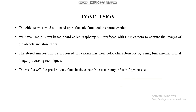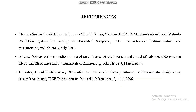In conclusion, we have used the Linux-based board Raspberry Pi and a USB camera or Raspberry Pi camera to calculate color characteristics using digital image processing techniques with Python algorithms. The output results will match pre-known reference values, and in the case of any industrial process, our proposed system can be effectively used. Thank you.